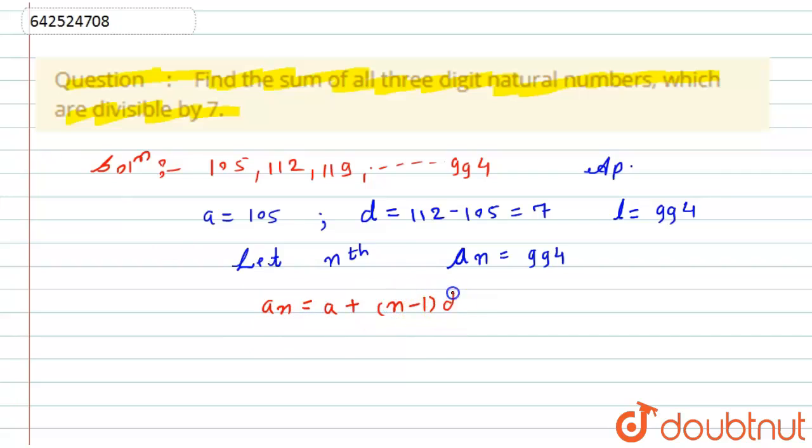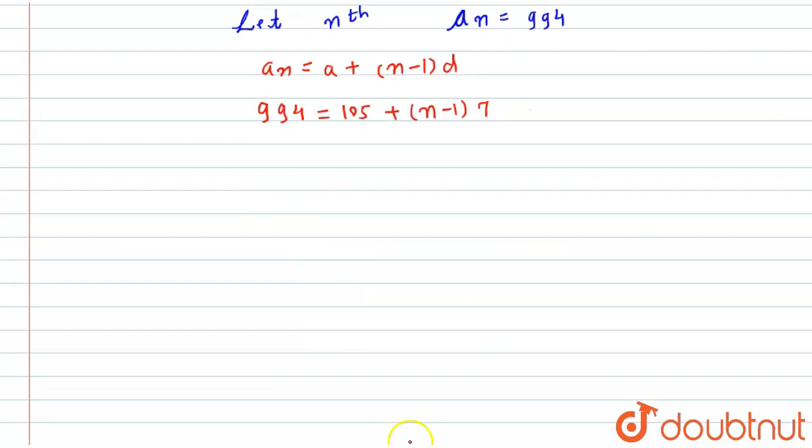Now simply I will put here the values so that I can be able to find the value of n. So here a_n is nothing but 994, which is equal to 105 plus (n - 1), we have to calculate, d is 7. Now I will take 105 to that side. Okay, the equation will become (n - 1) will be nothing but equal to 994 minus 105 divided by 7.